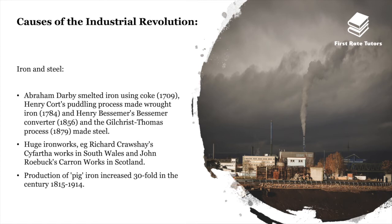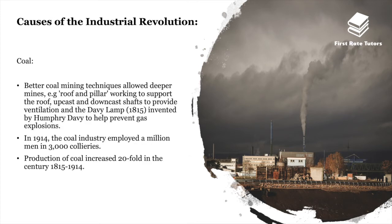In the industry of iron and steel, Abraham Darby smelted iron using coke in 1709. Henry Cort's puddling process made wrought iron in 1784, and Henry Bessemer's Bessemer converter in 1856, as well as the Gilchrist-Thomas process in 1879, made steel. Huge ironworks — such as Richard Crawshay's Cyfarthfa works in South Wales and John Roebuck's Carron works in Scotland — were also influential, and production of pig iron increased 30-fold between 1815 and 1914.